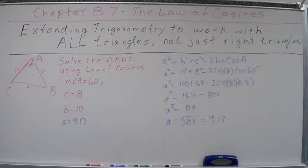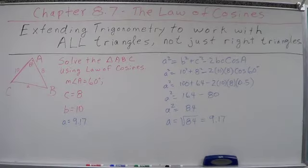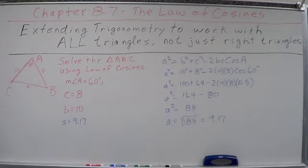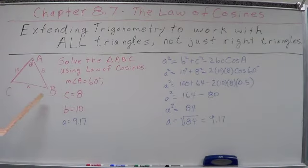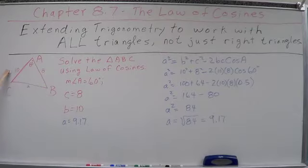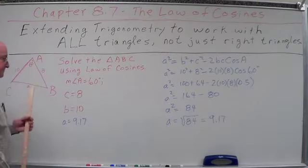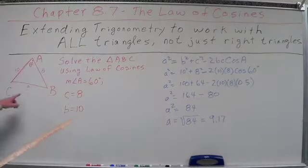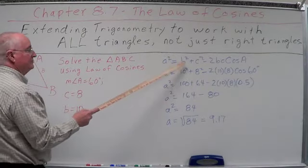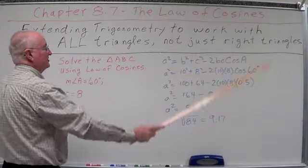Now, let's use the law of cosines to actually solve a triangle. Just like the law of sines, we're going to use the term solve a triangle to mean find all of its unknown parts. We're given this triangle ABC, and we're going to solve it using the law of cosines. We're given that measure of angle A equals 60, C equals 8, and B equals 10. We need to find A. Since we're going to try to find A, we're using this equation: A squared equals B squared plus C squared minus 2BC cosine of A.